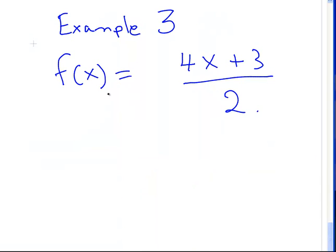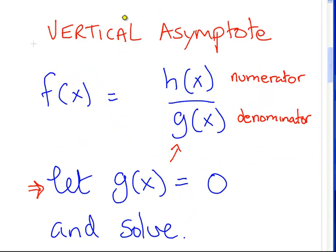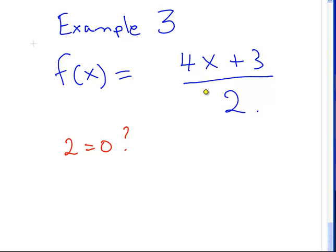Here's another one: 4x plus 3 over 2. What's the denominator? 2. Let 2 equal to zero — wait, let's go back. The denominator, g of x, has to be a function of x. The denominator here is just 2; it's not a function of x, so this doesn't work. In this case, we can just as easily write this expression as 2x plus 1.5 — no denominator.